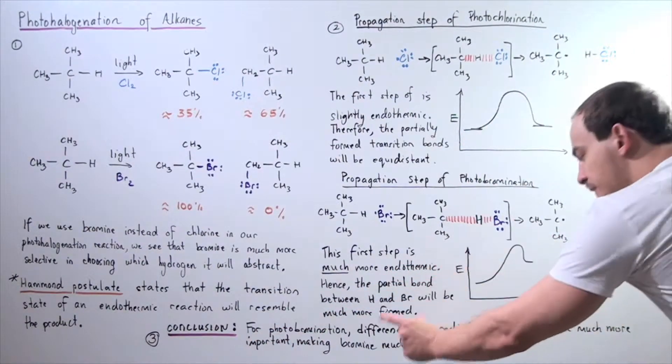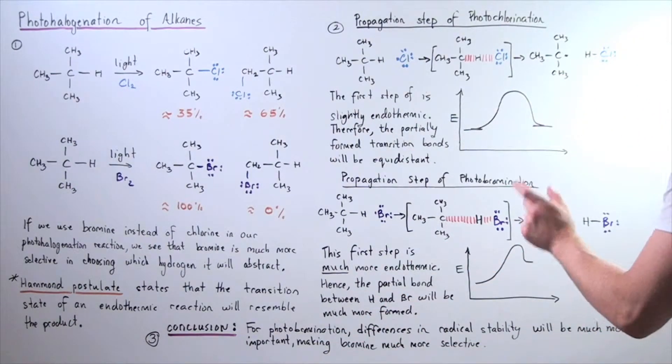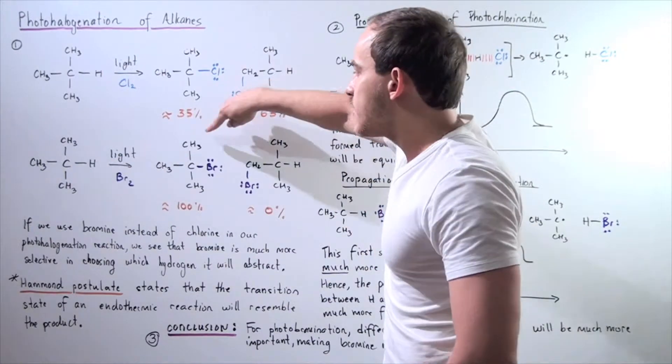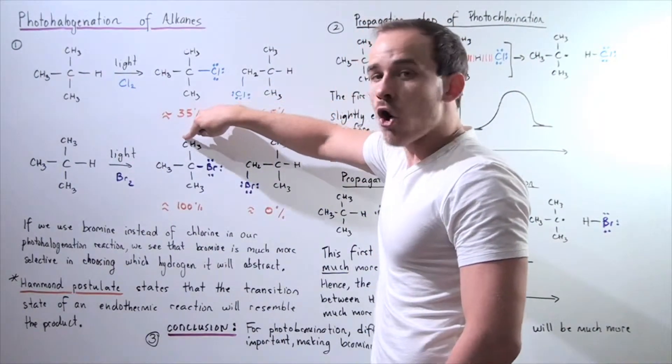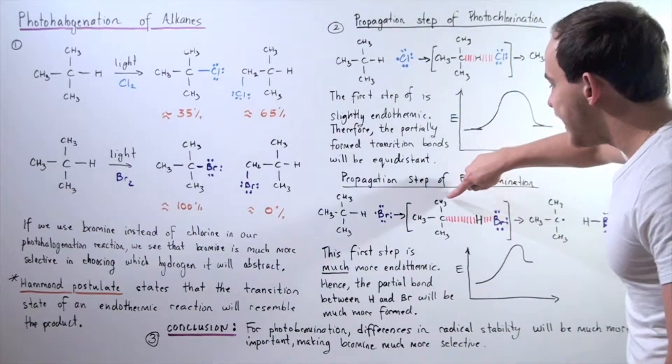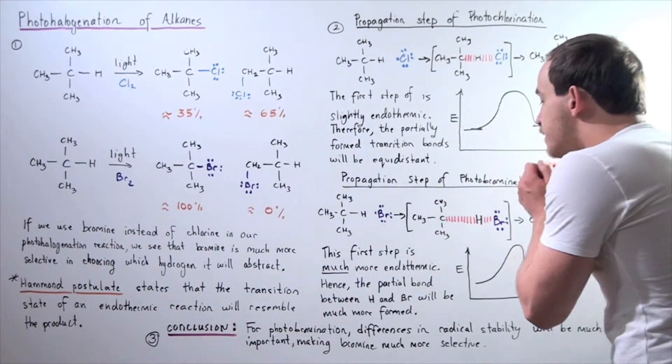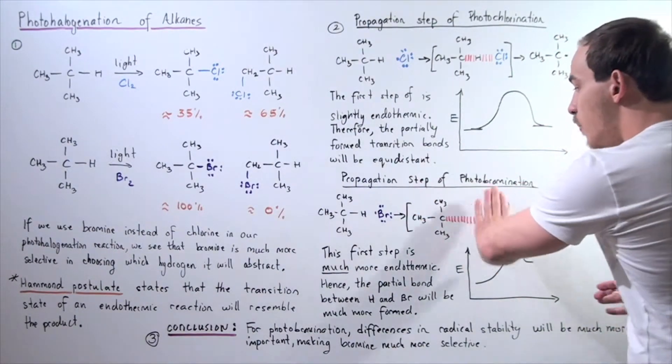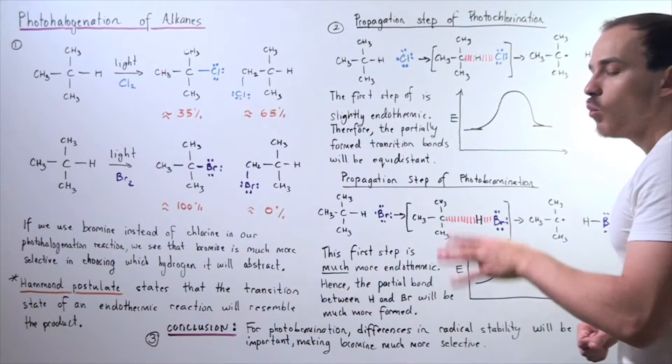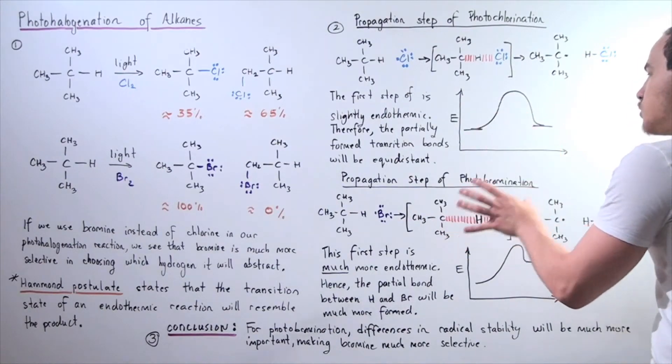So, once again, what do we conclude? For photobromination, differences in radical stability will be much more important, making bromine much more selective. In other words, the reason the bromine will not want to take away the H atom from our primary carbon position is because if this is the case, if the bromine does choose to take away the H from the primary carbon position, the partially formed radical will be very, very unstable compared to this more stable case. And so, the other case where bromine abstracts the H from the primary will not take place. This will be the only one that will take place because it's much more stable.